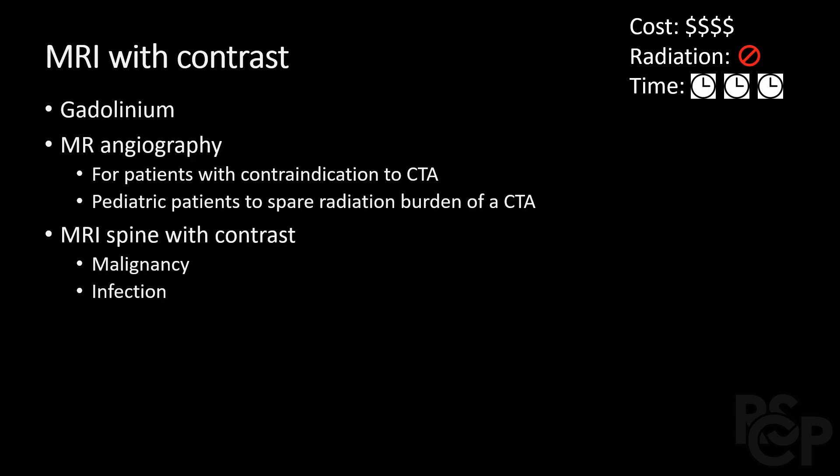There are several indications for MRI with contrast. MR contrast is gadolinium-based, which is not iodinated, but patients can still have an allergy to it. MR angiography, or MRA, is for patients with a contraindication to CTA, as CTA is often preferred since it is cheaper and faster. For pediatric patients we typically want to avoid irradiating them, and therefore we prefer MRA to CTA in these patients.